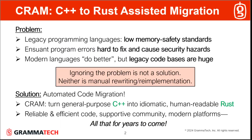The problem CRAM addresses is arguably one of the most serious problems in the software industry today, namely that we have decades' worth of code written in legacy programming languages, and that code often suffers from low memory safety standards. This is serious because such code almost inevitably contains very hard to locate and fix errors, and these errors in turn often give rise to security hazards.